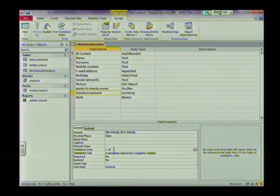Together with your validation rule, you can also enter some text and this will appear in a text box or a pop up for your users. Let's quickly have a look at how this works. So I've entered a validation text here. A donation cannot be a negative number. Let's go back to our data sheet view to test this.